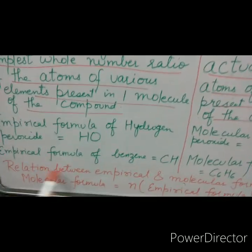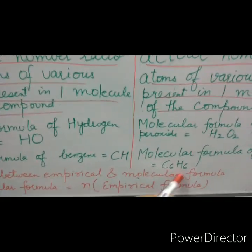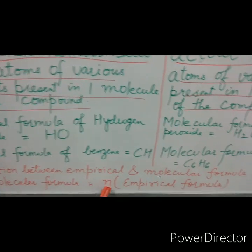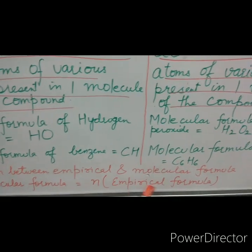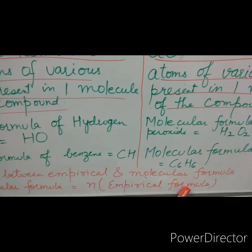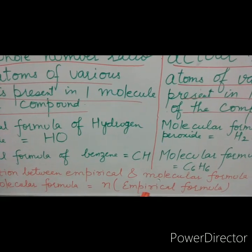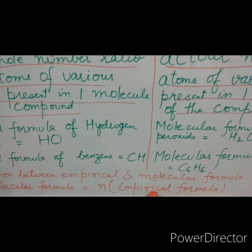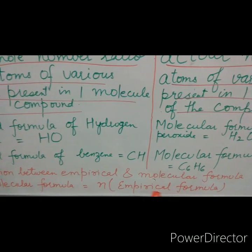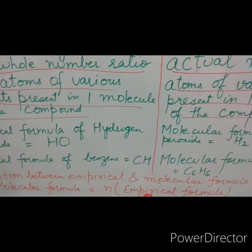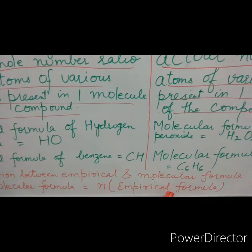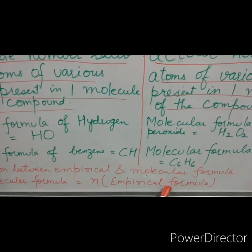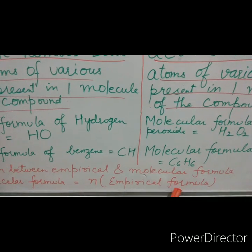The empirical formula of benzene is CH, but the molecular formula is C₆H₆, giving the actual number of carbon and hydrogen atoms. The molecular formula equals N multiplied by the empirical formula. By knowing the mass percentage of various elements, we can calculate the empirical formula, which we will do in the next class.